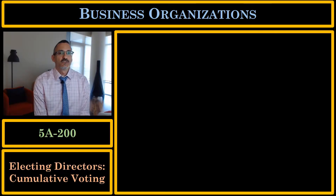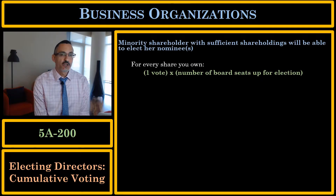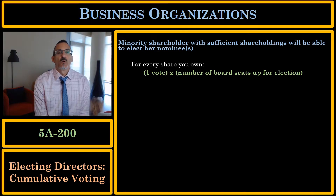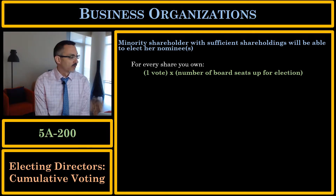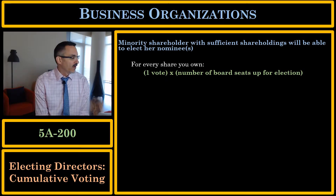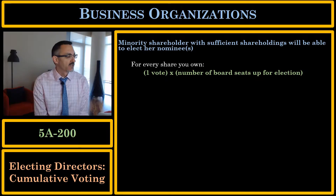Let's talk about an alternative to straight voting called cumulative voting. Under cumulative voting, a minority shareholder with a sufficient number of shares will be able to elect at least one director, and maybe more, depending on how many shares she has. Under cumulative voting, for every share you own, you get one vote times the number of board seats up for election.